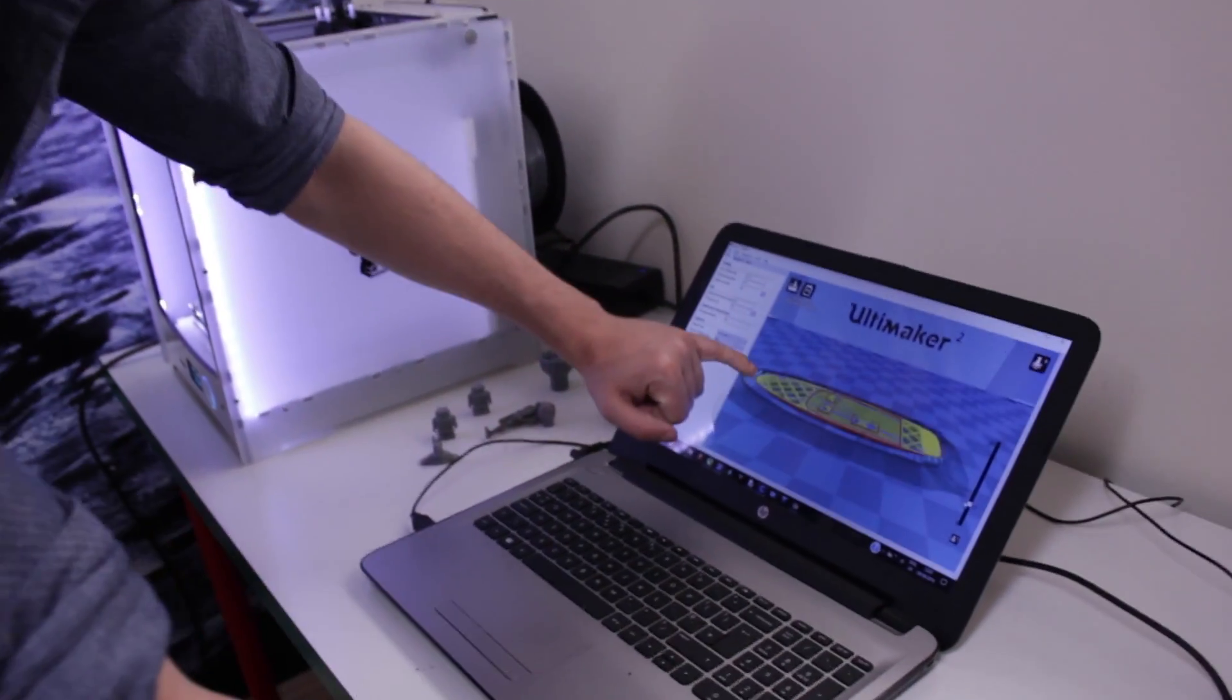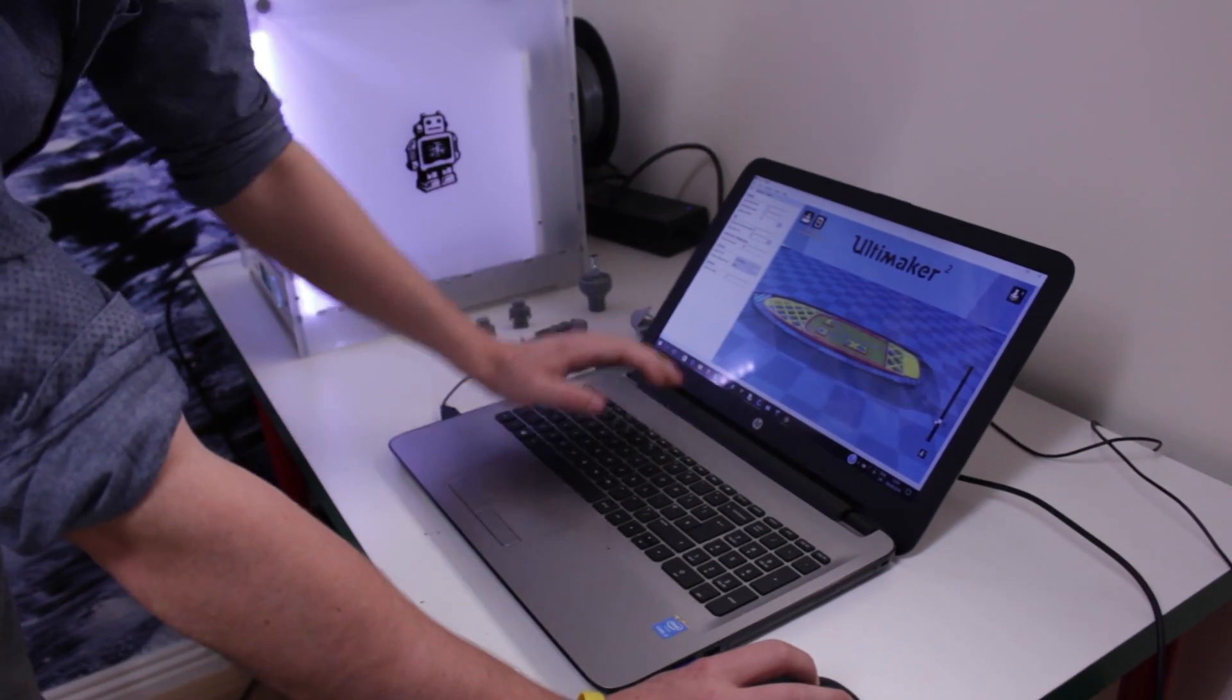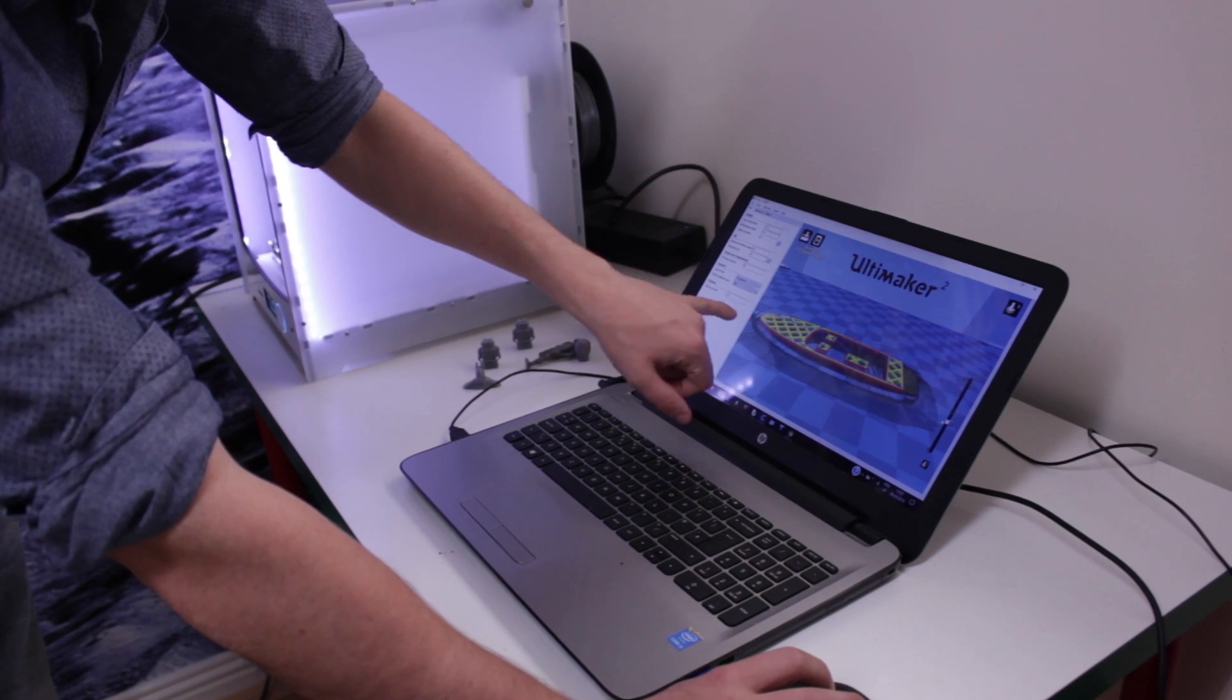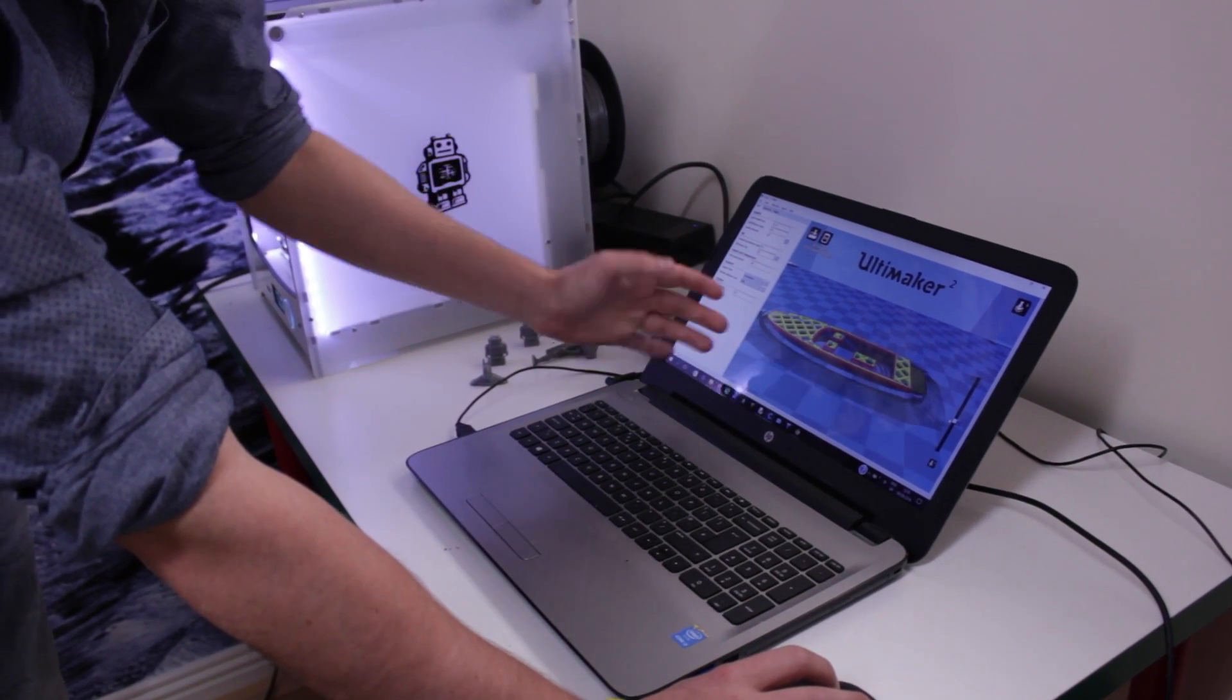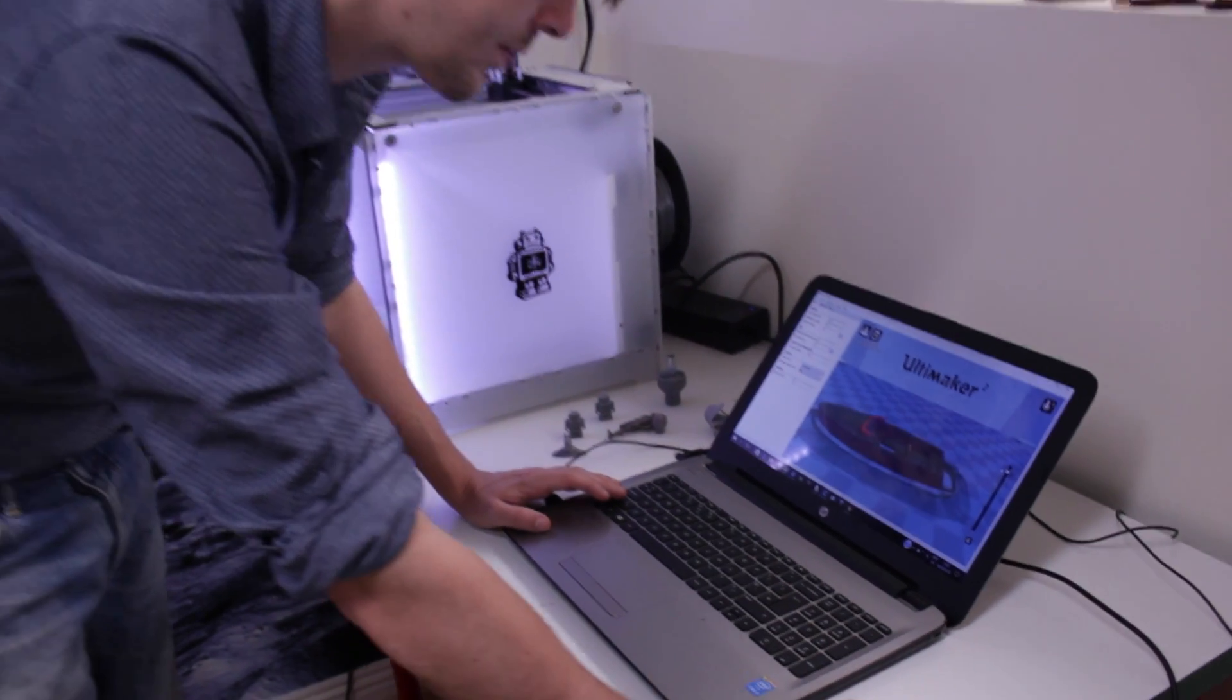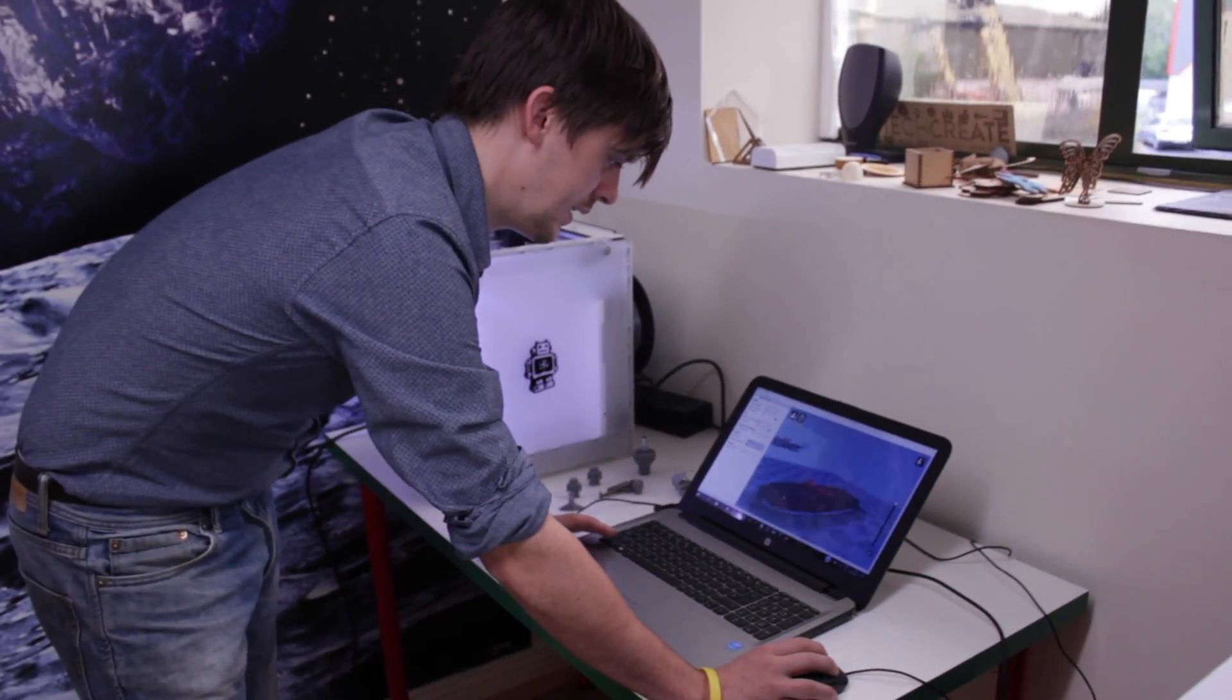So here on our right we have each actual layer and then it shows different things. So blue is movement without printing, yellow is infill, red is actual print of our model. And that's what's going to come out.